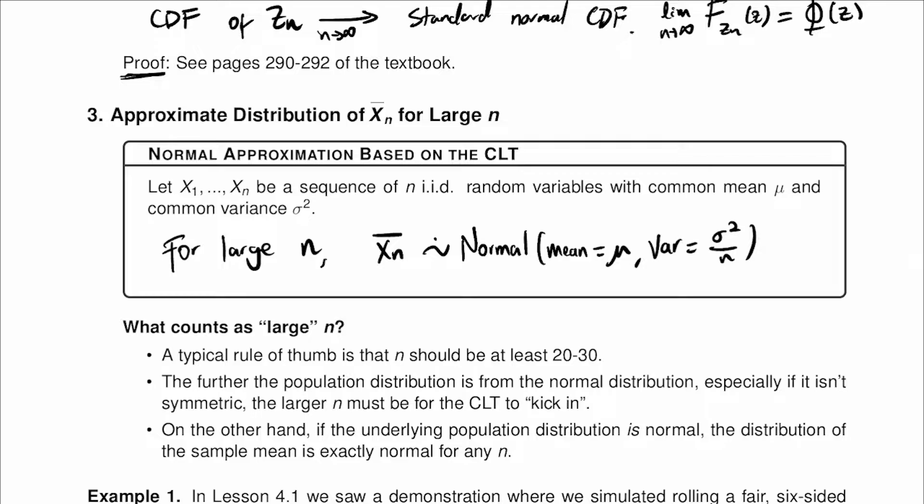This μ is the expected value of xi, and it is actually the expected value of the sample mean. The variance here is the variance of the sample mean, which is the variance of the random variables over n.